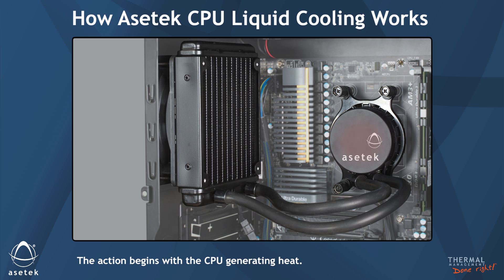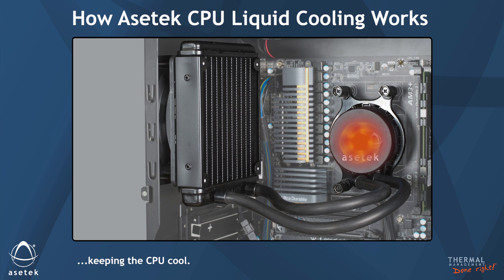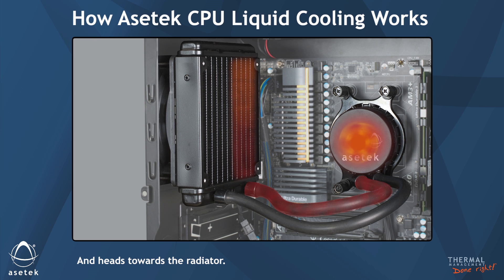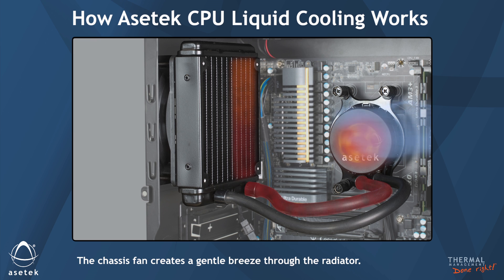The action begins with the CPU generating heat. Heat transfers through the cold plate into the cooling liquid, keeping the CPU cool. Warm liquid is pushed by the pump into the outlet tube and heads towards the radiator. The chassis fan creates a gentle breeze through the radiator.